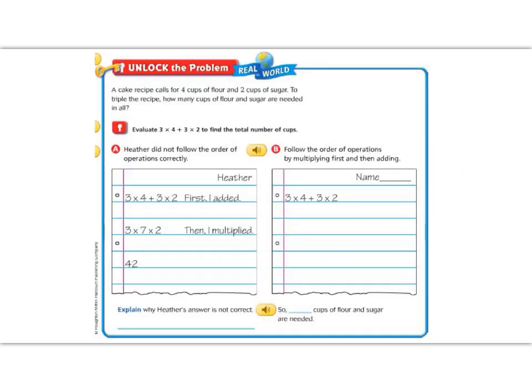Let's go ahead and start with our unlock the problem. It says, a cake recipe calls for 4 cups of flour and 2 cups of sugar. To triple the recipe, how many cups of flour and sugar are needed? So we're going to need to evaluate 3 × 4 + 3 × 2 in order to solve.